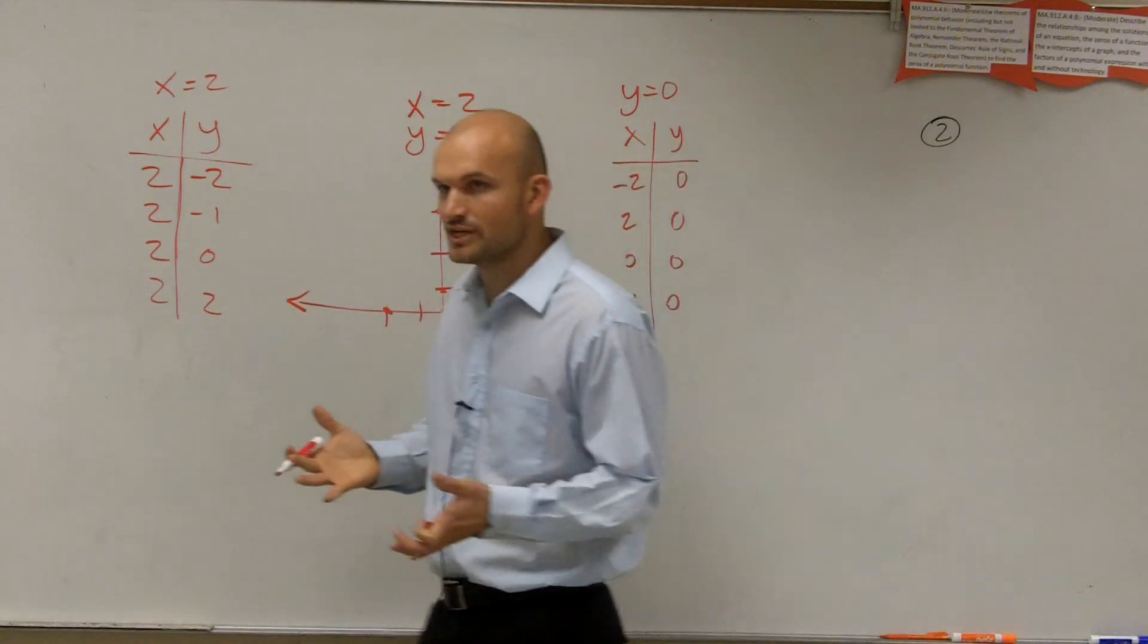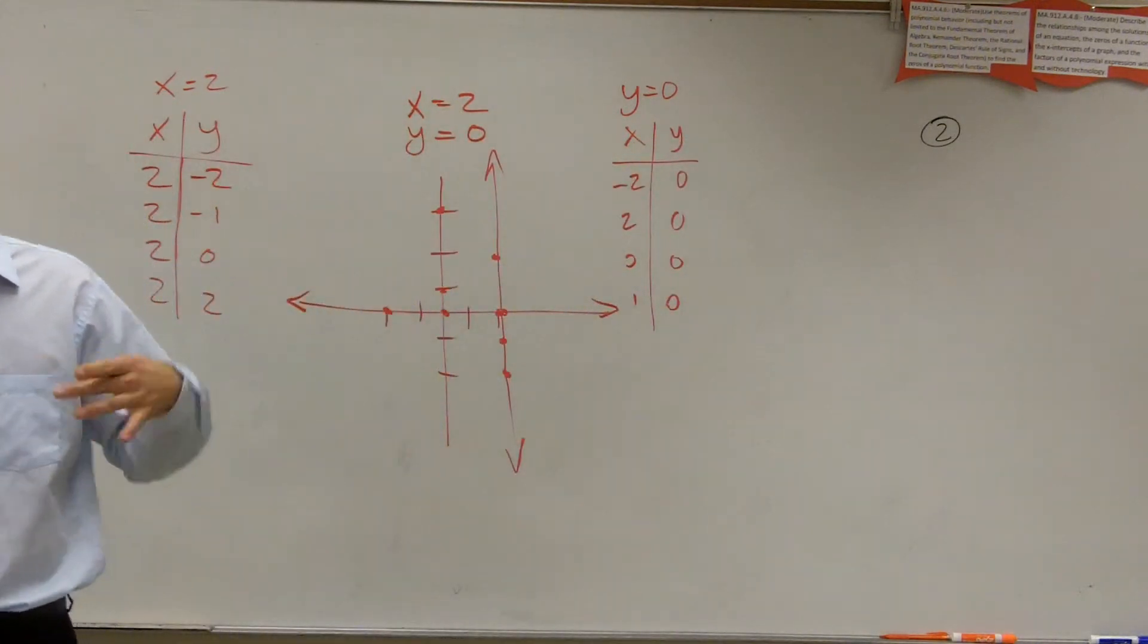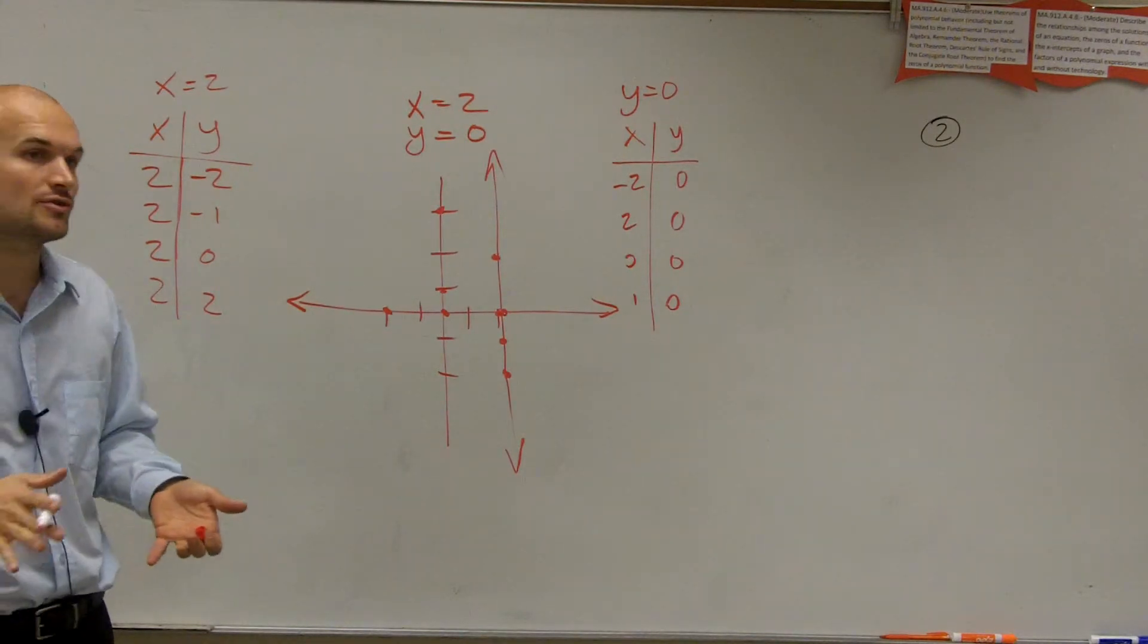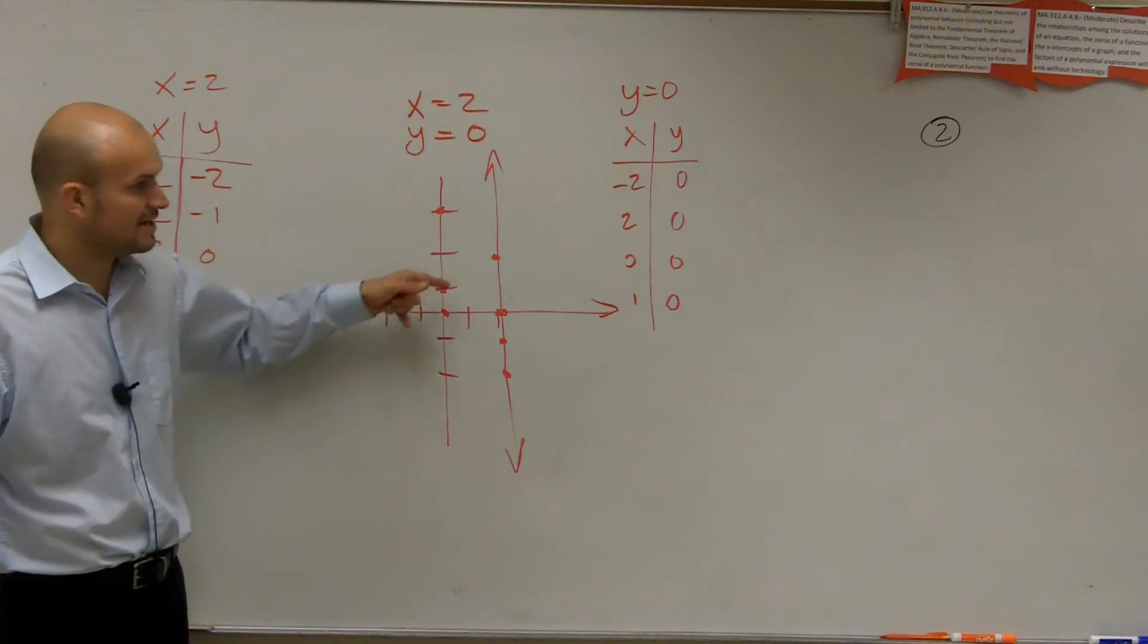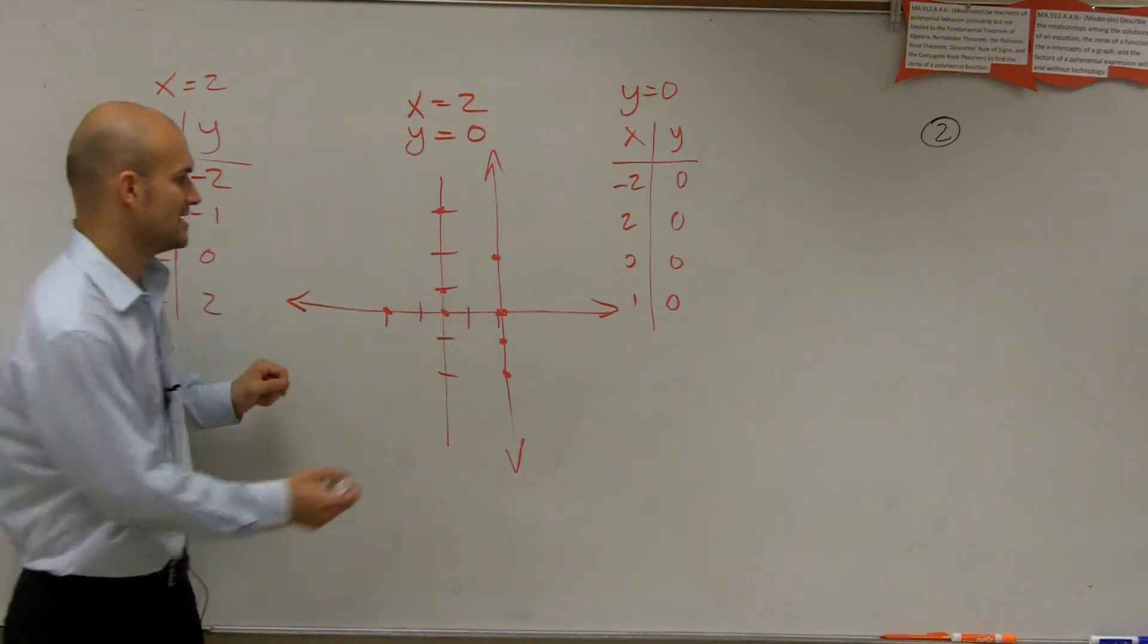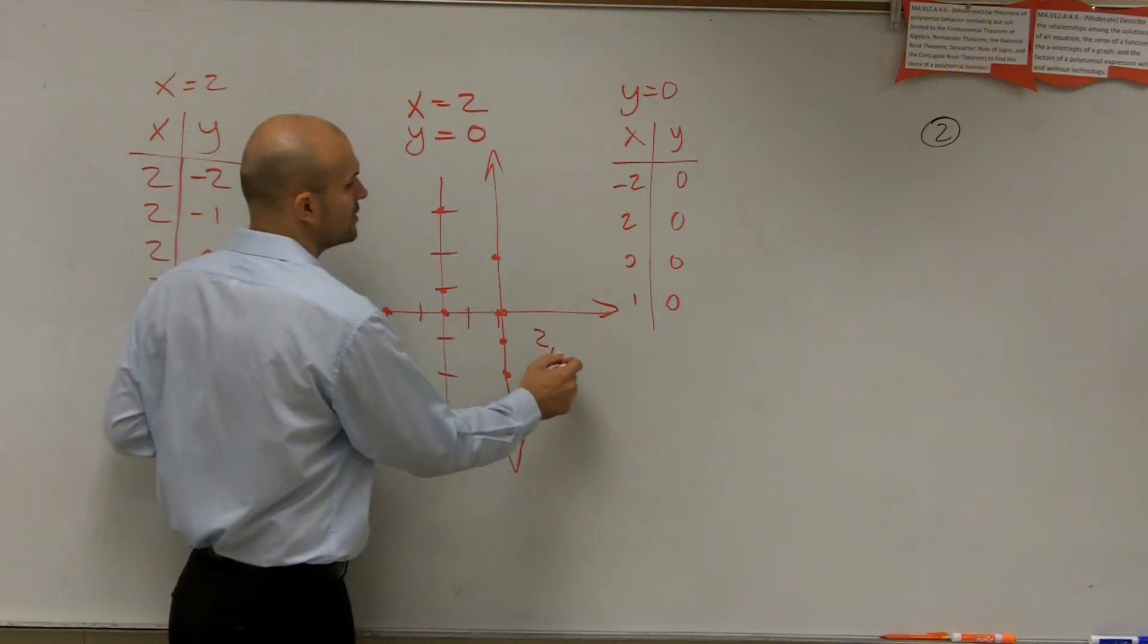Now remember, the solution is going to be a point that makes both equations true, OK? So that means it's going to be the intersection of your two graphs. So when looking up here, I say, where do these two lines intersect?